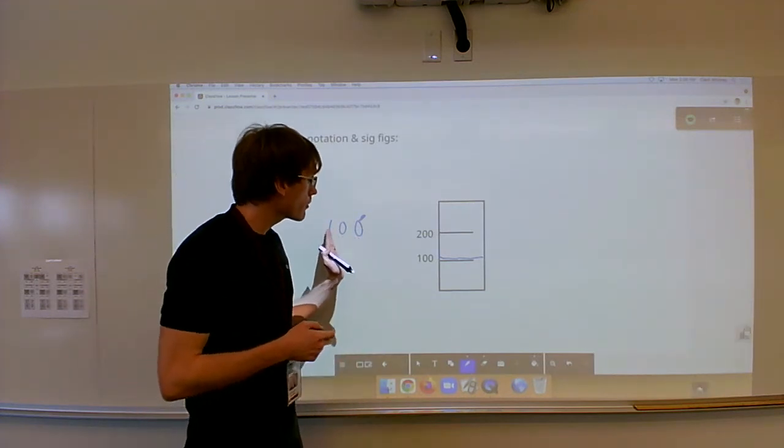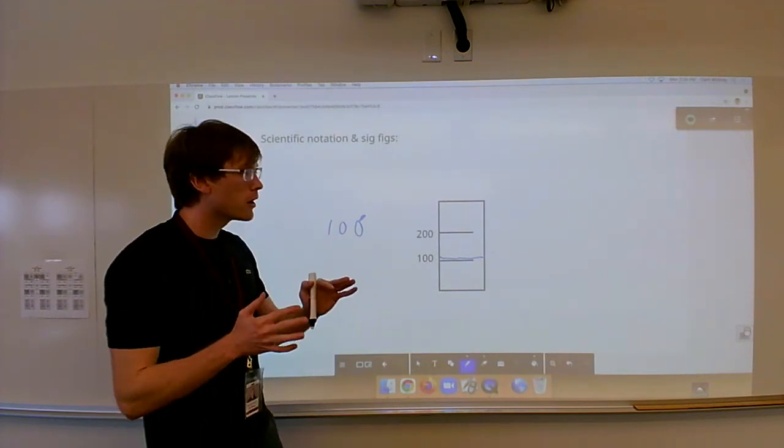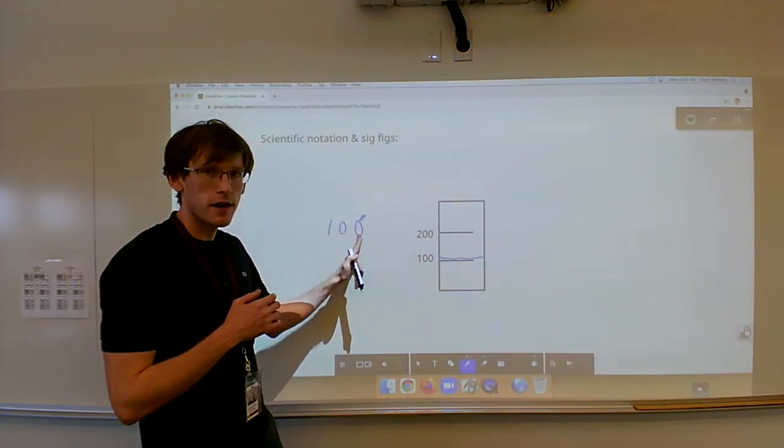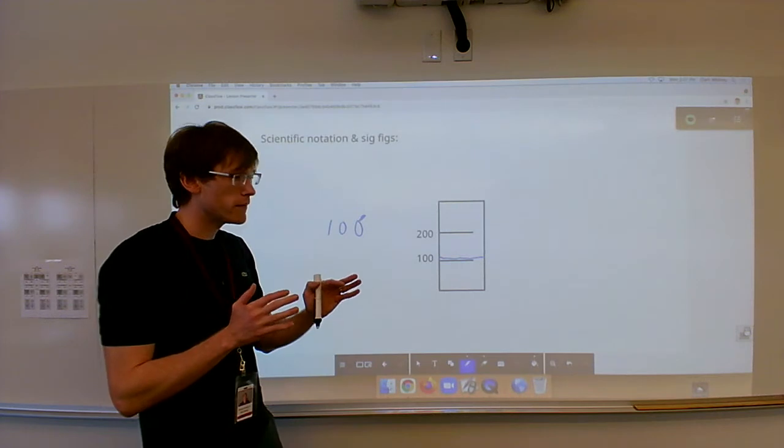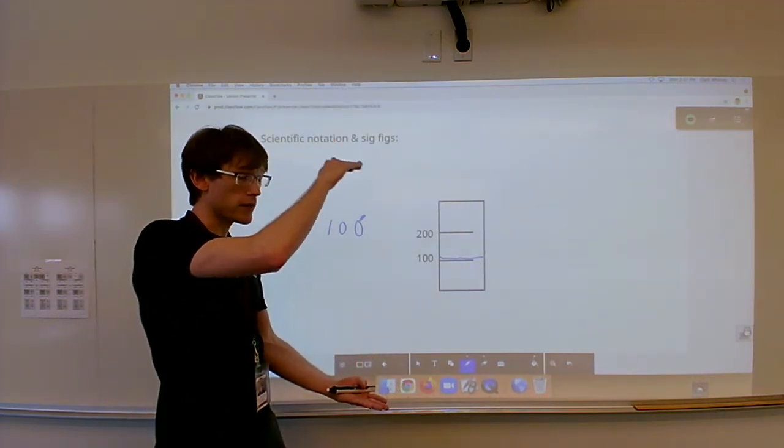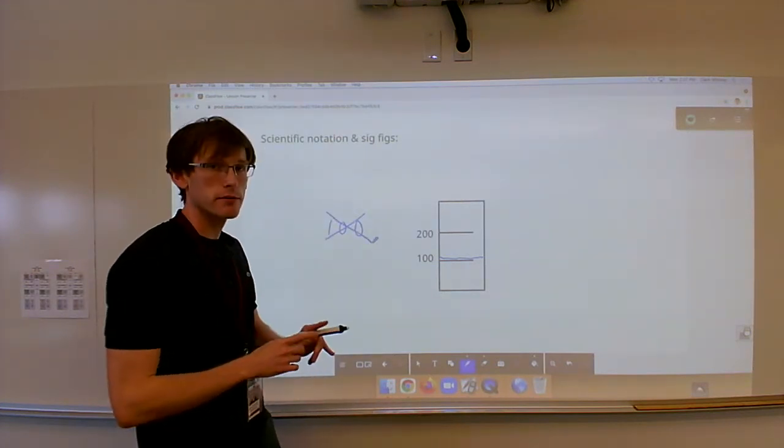So if I were to report this measurement, nobody would know that that 0 is significant and this one is not. And actually, they would think that my measuring device had only 0 and 1,000 with nothing else in between. So we can't use this as a measurement.